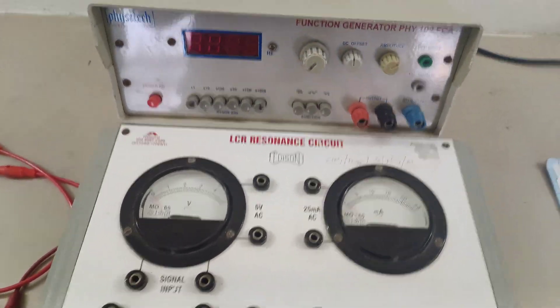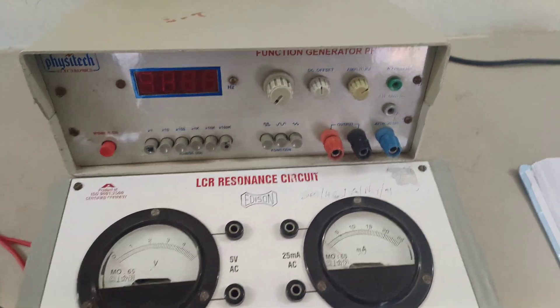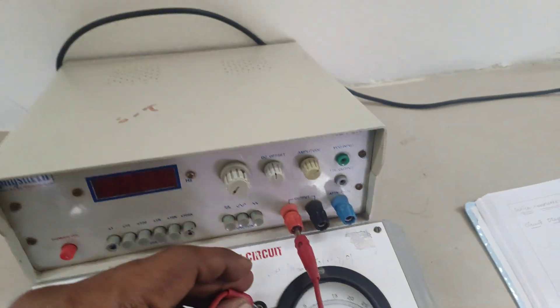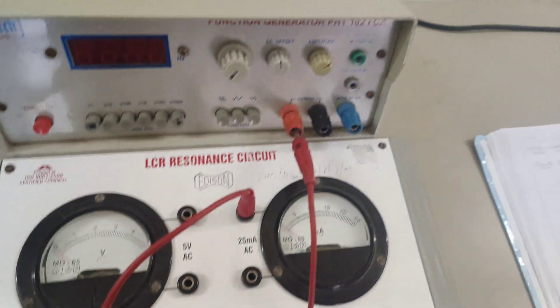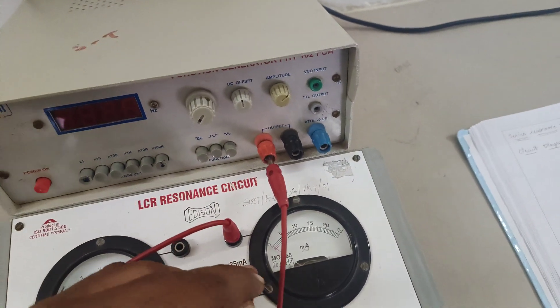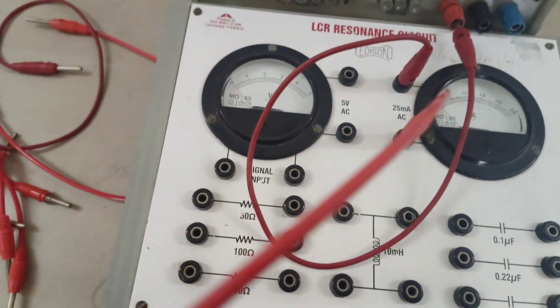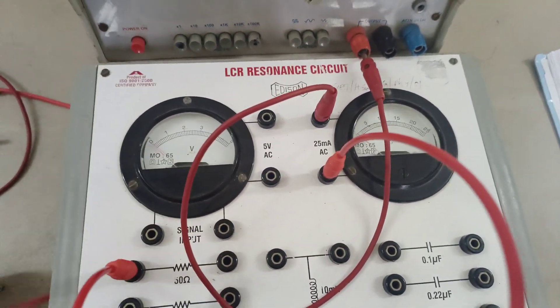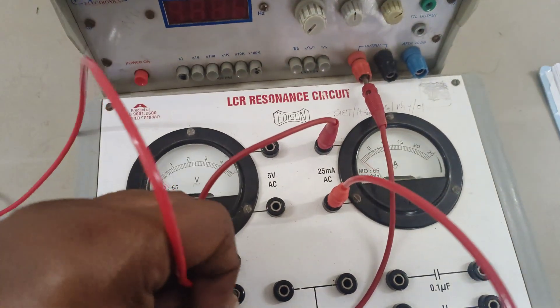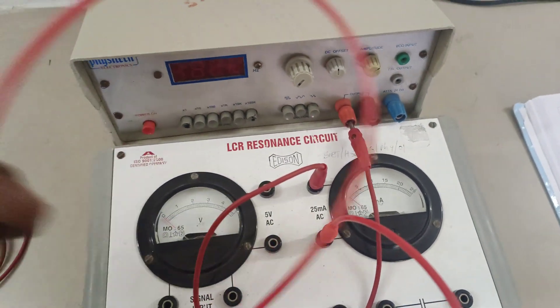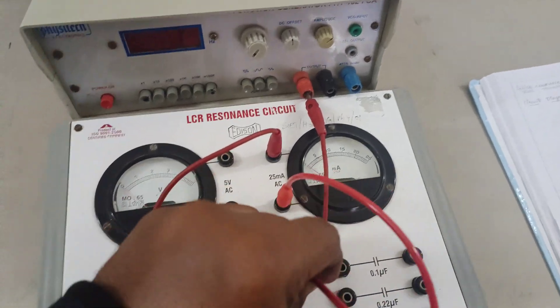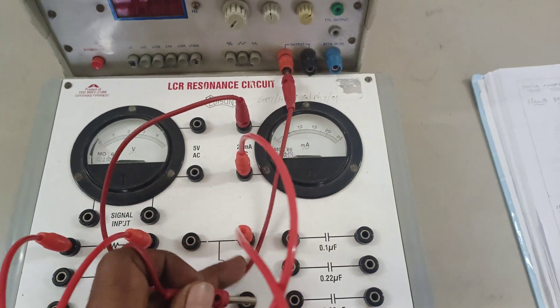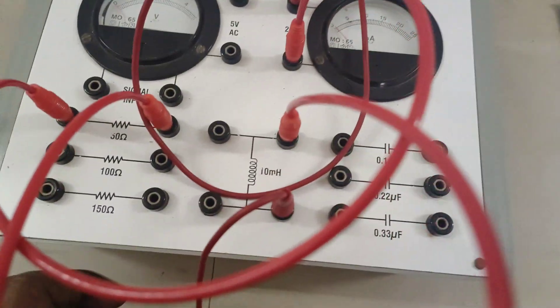Now I will show you how to give the connections. One end of the resistor is connected to this terminal. The resistor's other end is connected to the inductor terminal. The inductor's other terminal is connected to the capacitor.